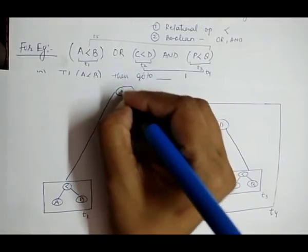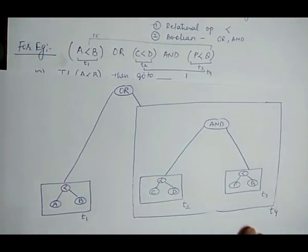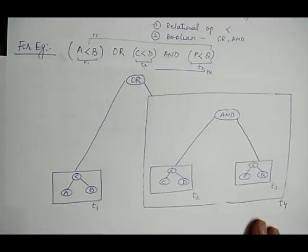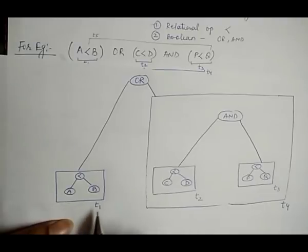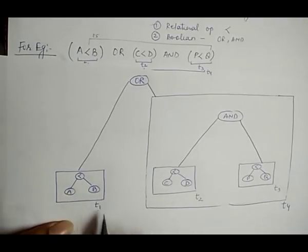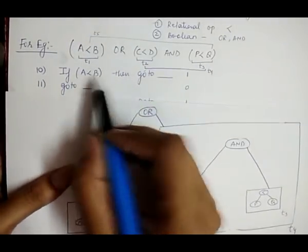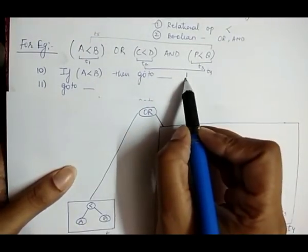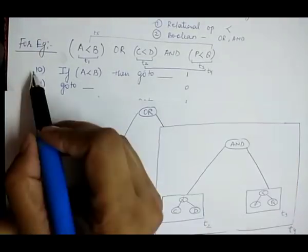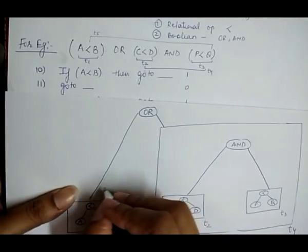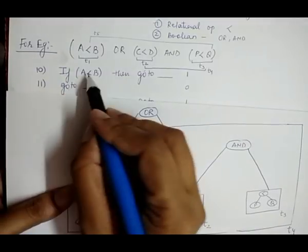Now for temporary variable t1, which stores 'a < b': if this condition is true, it is shown on line number 10, so the true value for this condition is line 10. The false condition for this is on line number 11.